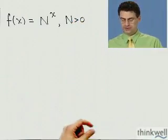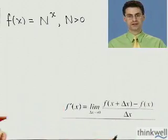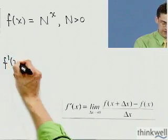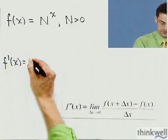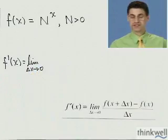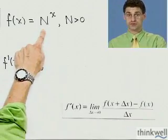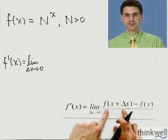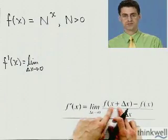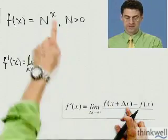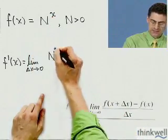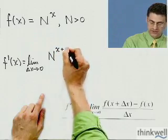I'm going to use the definition of the derivative to figure out what that equals. f'(x) equals the limit as Δx approaches 0. Now you can see the difference between this function and others we've looked at. What is f(x + Δx)? Wherever I see an x here, I replace it by x + Δx. You'll notice the x is in the exponent. So this is going to be N^(x + Δx). That's exactly this function evaluated at x + Δx.